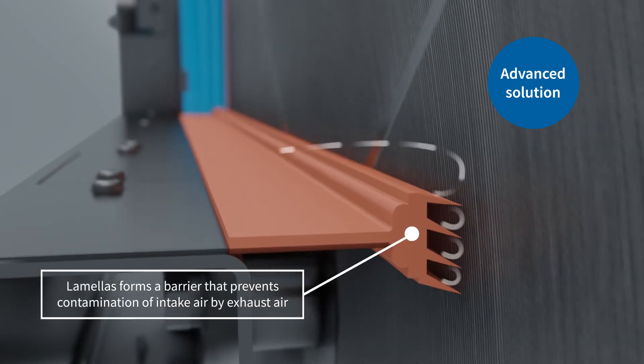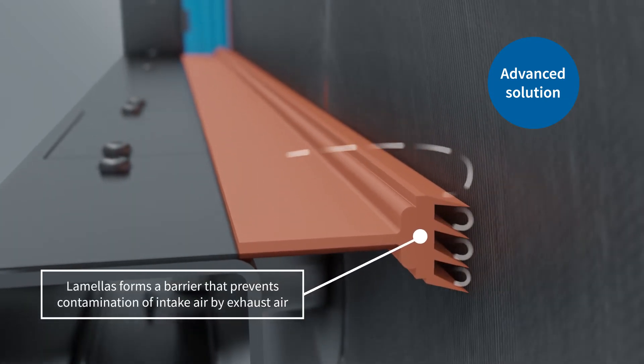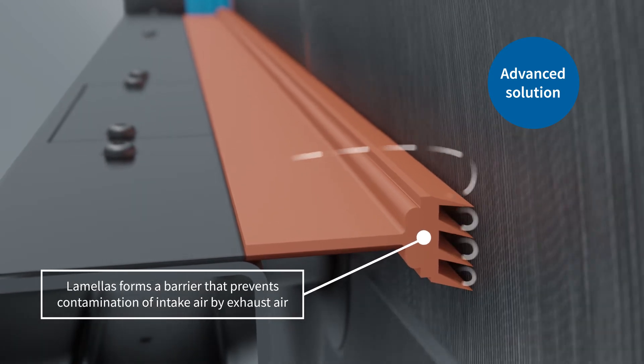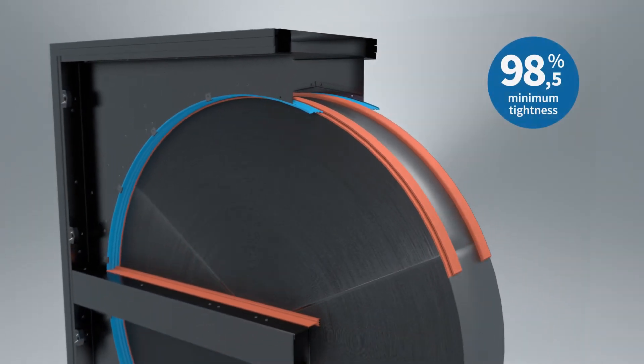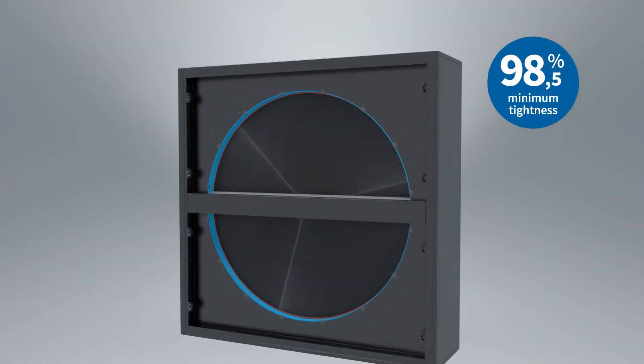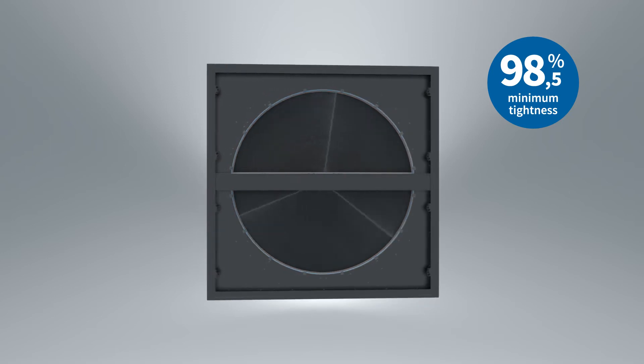This solution considerably reduces the overall untightness of the rotor, up to 1.5% of air volume at maximum. While designing air handling units, the need for energy to cover these losses is therefore considerably lower.